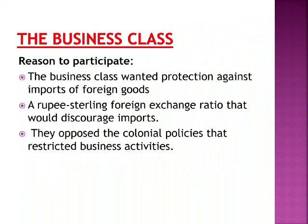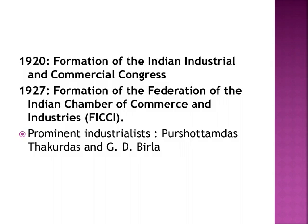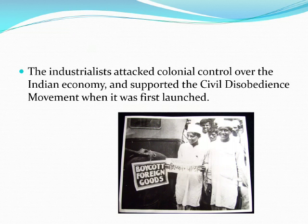The business class wanted protection against imports of foreign goods and a rupee-sterling foreign exchange ratio that would discourage imports. They opposed colonial policies that restricted business activities. In 1920, they formed the Indian Industrial and Commercial Congress, and in 1927, the Federation of the Indian Chamber of Commerce and Industries, FICCI. Prominent industrialists included Purshottamdas Thakurdas and G.D. Birla, who attacked colonial control over the Indian economy and supported the Civil Disobedience Movement when it was first launched.